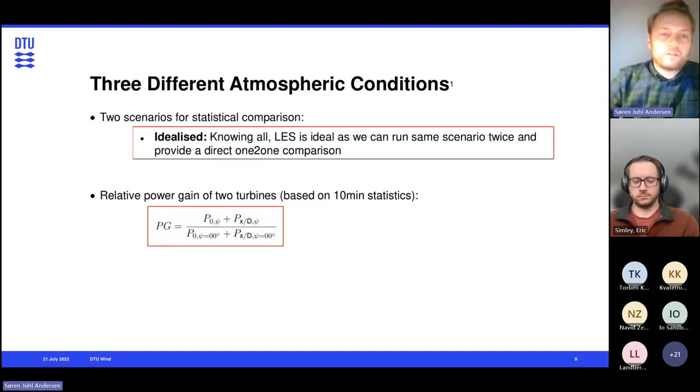So we really want to compare the statistics for toggling for different atmospheric conditions, and we sort of set up two different scenarios for this statistical comparison. So first off, I'll show some results where we have what we call idealized. So basically that is that we know everything. LES is ideal because we can run the same scenario twice with everything the same, except one change in our parameter, in this case, the yaw angle. And therefore, we can compare the relative power gain of two turbines as this ratio here, where we basically compare what is the power of the first turbine plus the power of the second turbine at a certain distance. So the ghost turbines allows us to compare at different distances for a given yaw angle of the front turbine. And that ratio we take relative to the baseline where the first turbine is not yawing. And we do this statistics on 10-minute basis, so we can discuss that afterwards.